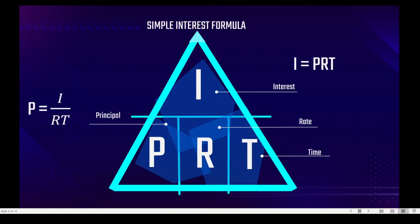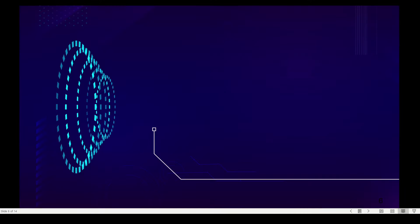if we wanted to solve for P? If we covered up P, we would get I divided by R times T. And if we wanted to solve for R — pretend that R is covered up — we would get I divided by P times T. And if we wanted to solve for T, imagine T is covered up, we would get I divided by P times R. Let's look at the examples.